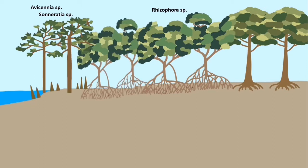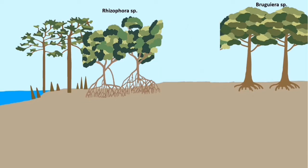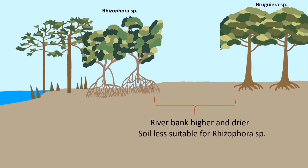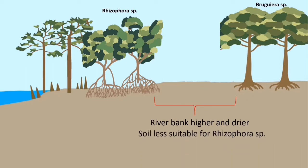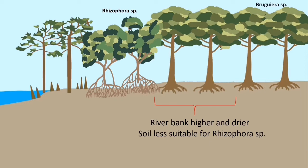In the middle zone, the tangled prop roots of Rhizophora species trap twigs and mud which are washed away, blocking the flow of water. The trapped mud causes sedimentation to occur much faster. Besides, the riverbank becomes higher and drier as less seawater overflows during high tides, making the soil less suitable for Rhizophora species and more suitable for Bruguiera species, which then succeeds and replaces Rhizophora species.